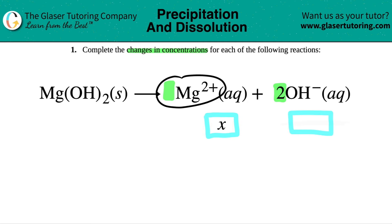There's no number in front of the Mg2+. Remember, if there's no number, that just means there's only one of them. That's why this changes by 1x. But 1x is the same thing as just saying x.